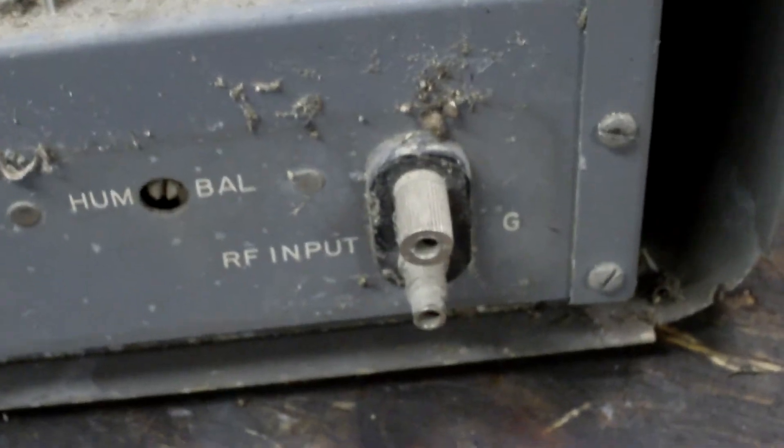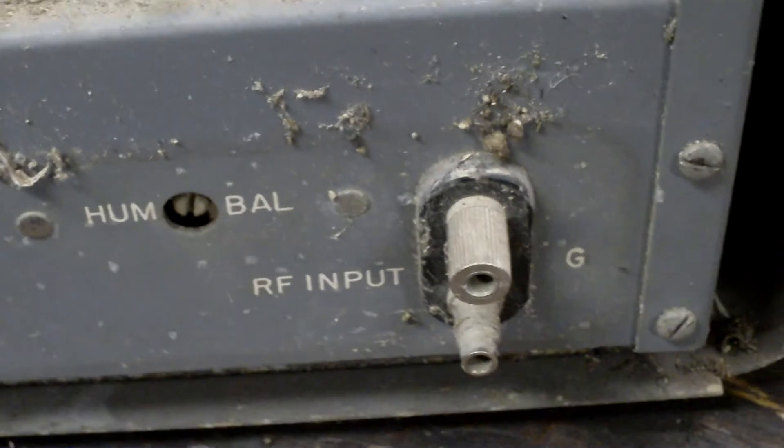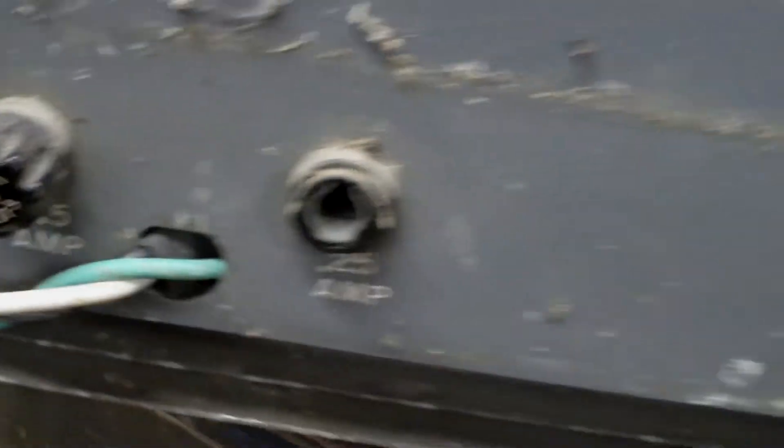And also note on the back it says hum balance and RF input G, probably for a ground over there. Fuses: 0.25 amp and 1.5 amp. I never had the other one in, so I don't know if it does anything different with that in.